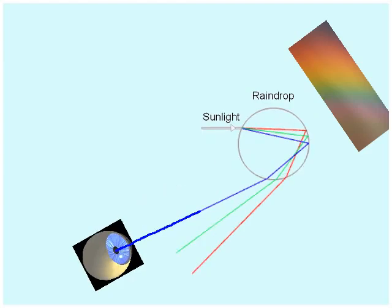And after it's fallen a little bit further, then the blue light, which has been bent at a sharper angle, comes to your eye. And that drop of water looks blue to you.